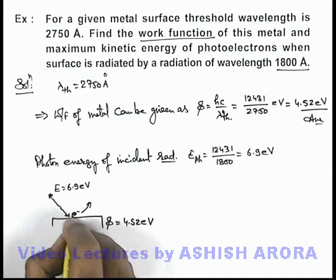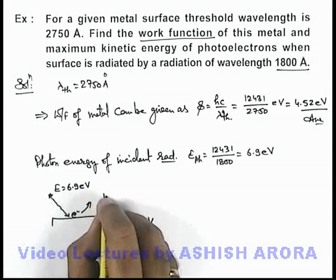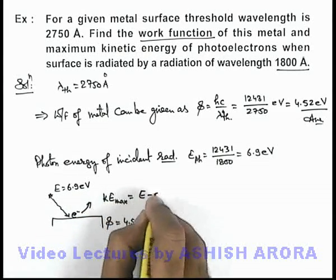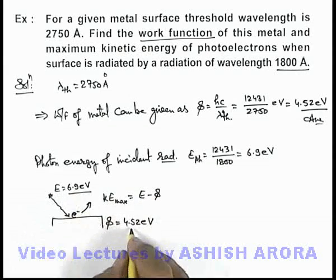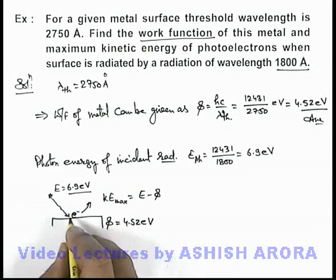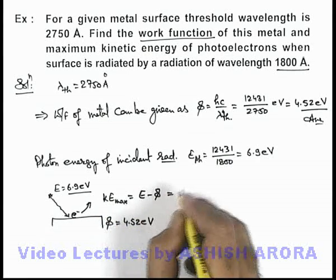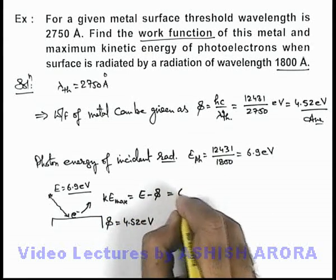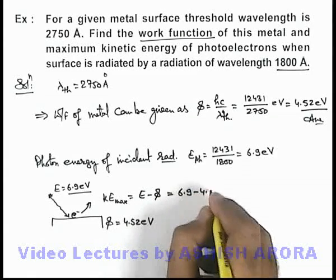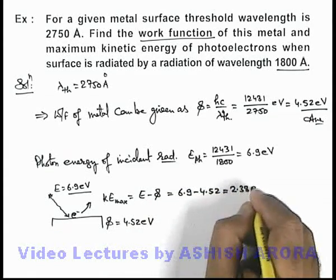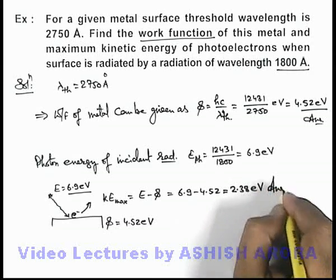Then the electrons which are ejected out from the surface will have maximum kinetic energy given as E minus phi, because out of this energy work function will be used in ejection and remaining will be the maximum possible kinetic energy. Then on substituting the values, we are getting 6.9 minus 4.52. The result is 2.38 electron volt. That will be the answer to this problem.